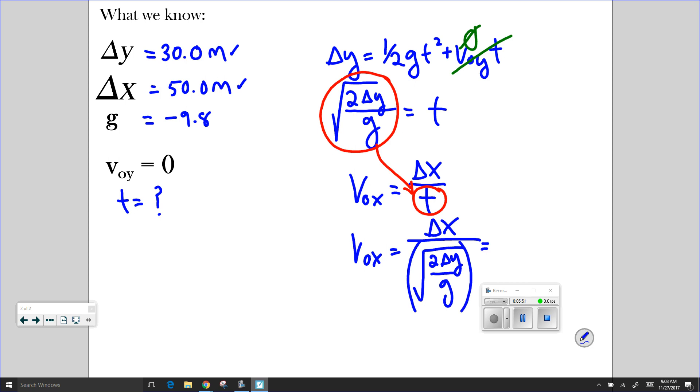So it's going to turn into delta x over the square root of 2 delta y over g. This is going to be the same thing as saying delta x times the square root of g over 2 delta y.